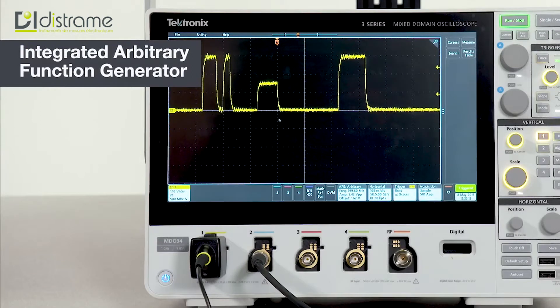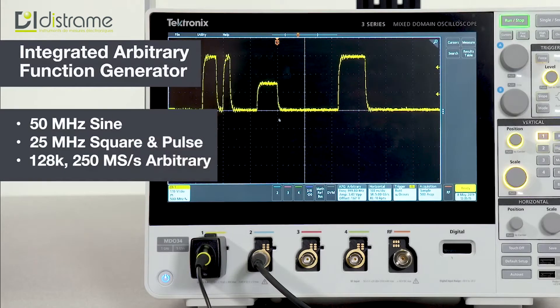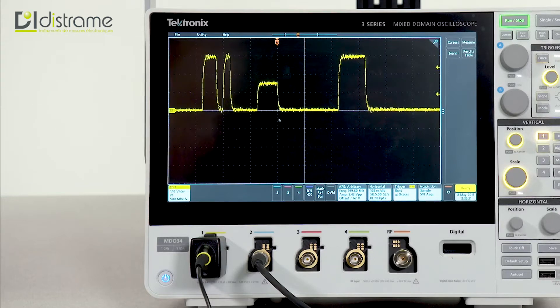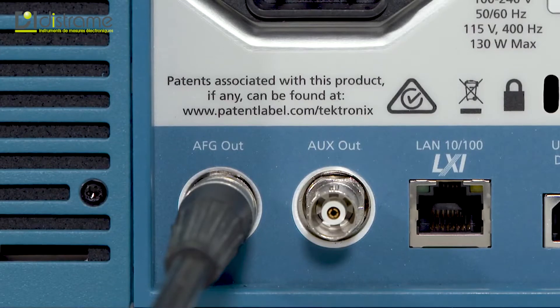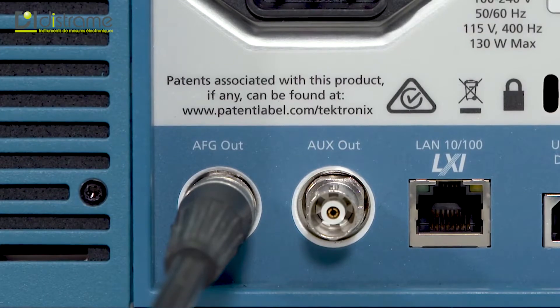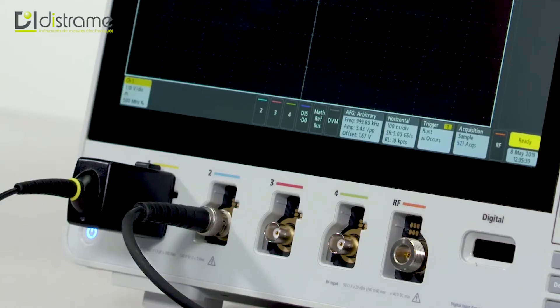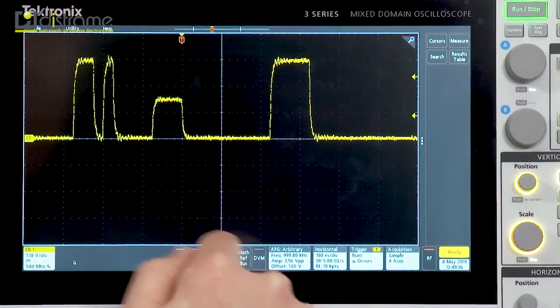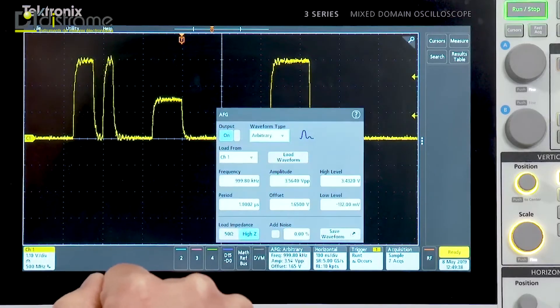The optional AFG can generate a wide variety of signal types and has performance comparable to a standalone function generator at a fraction of the cost, and it's built right into the scope. Signals are delivered through the 50 ohm output on the rear of the scope, and in this case we're routing it to channel 2. To use the AFG, simply double tap on its badge.